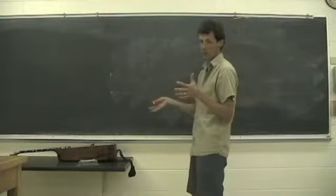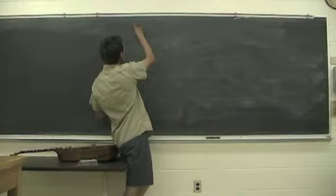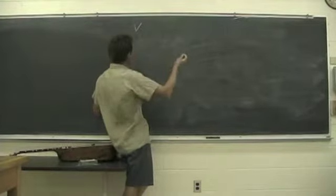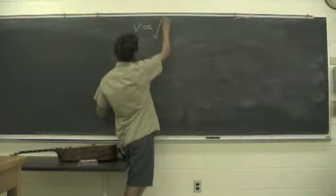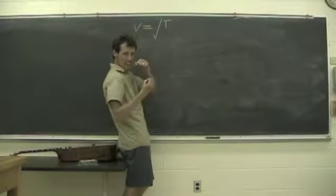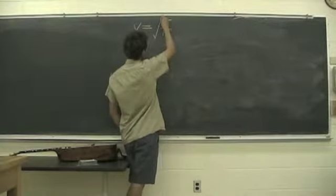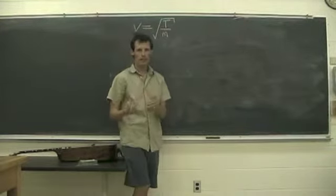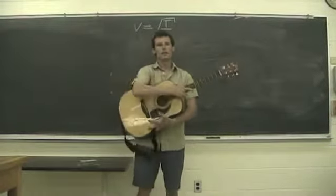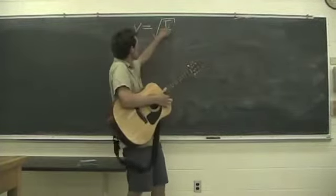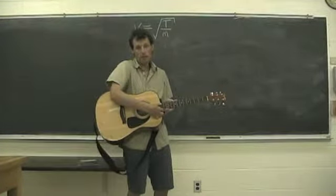So a good place to start might be to ask: well, how fast does a wave propagate on a string? Now I'm going to give you something that we're not going to derive—it's quite tricky to derive. I'm going to tell you that the speed at which a wave travels along the stretched string is equal to the square root of the tension in that string, that's how tightly it is stretched, divided by m, the mass of the unit length of the string or how heavy the string is.